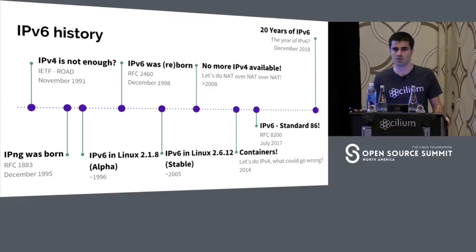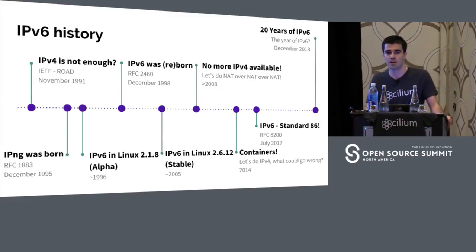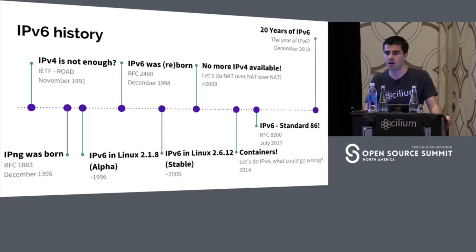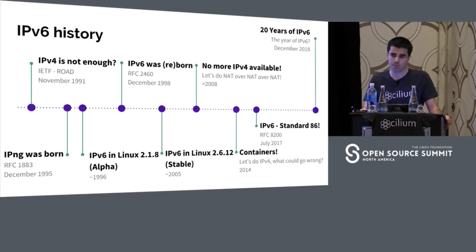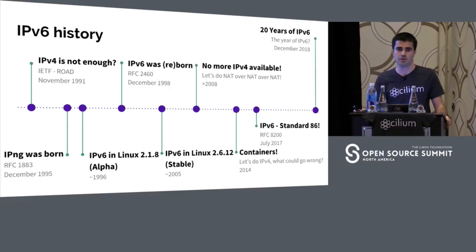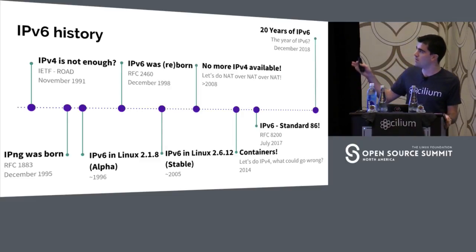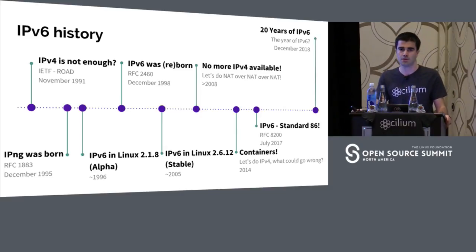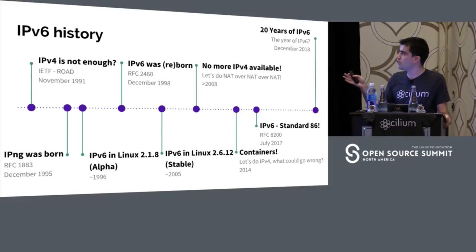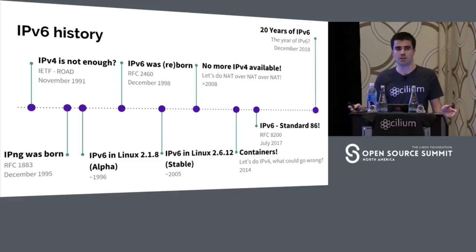Let's see about IPv6 history. Everything started around 1991, when the IETF was wondering if we had enough IPv4 addresses available in the future. As they realized that we might have a problem in the future, they created a group. In 1995, they developed the first version of IPv6, which was the draft. After a couple of years, around three years later, came RFC 2460, the IPv6 RFC. In 2005, there was a stable version of IPv6 in Linux. In 2008, we started seeing news regarding IPv4 exhaustion, and we needed to do something about it.